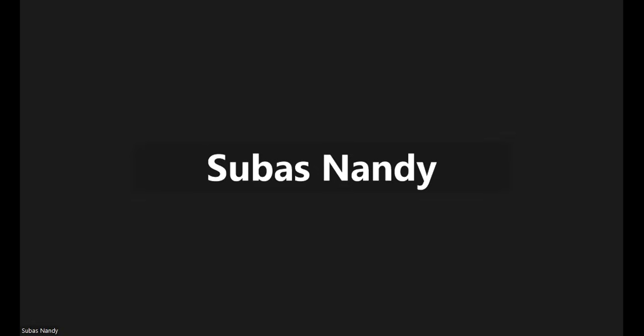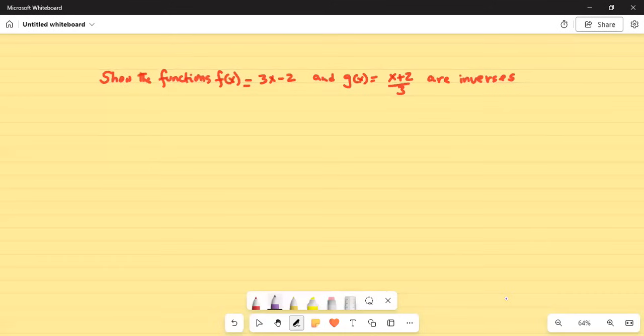Good day everybody. Today we are going to work on inverse of a function. Show the functions f(x) = 3x - 2 and g(x) = (x + 2)/3 are inverses.